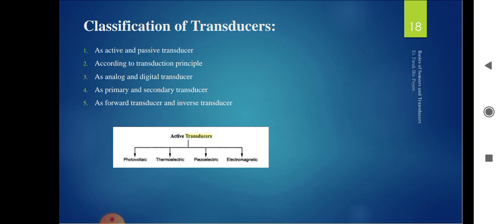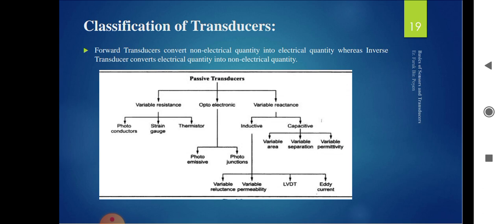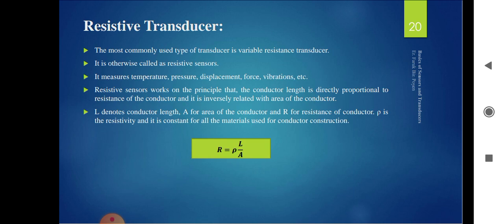The selected transducer must be free from errors and able to withstand overloads. The classification of transducers includes four types: photoelectric, thermoelectric, piezoelectric, and electromagnetic. Passive transducers as variable transducers are divided into three types: photoconductor, strain gauge, and thermistor. Optoelectronics includes photo-emissive and photo-junctions. Variable reactance types include inductive and capacitive. Inductive types include variable reluctance, variable permeability, LVDT, and eddy current. Capacitive types include variable area, variable separation, and variable permittivity.